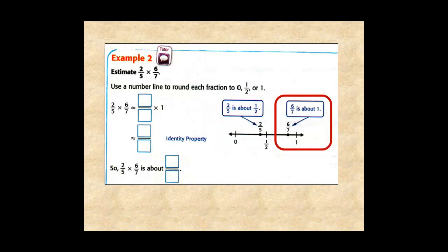So, 2/5 × 6/7 is approximately 1/2 × 1, which equals 1/2. Therefore, 2/5 × 6/7 is approximately 1/2.